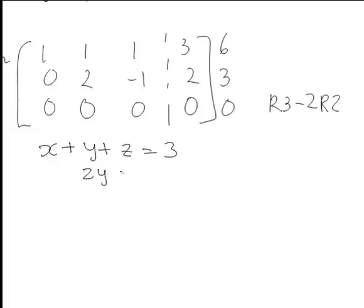2y minus z equals 2, and the last equation is simply 0 equals 0. Now this last equation is true but trivial, thus leaving us with two equations and three unknowns.